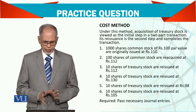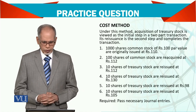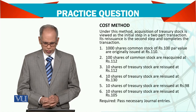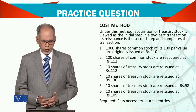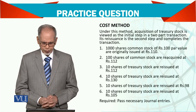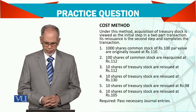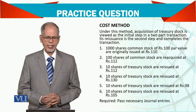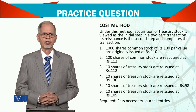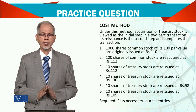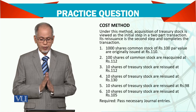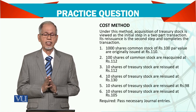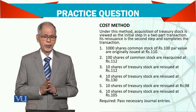Now let's see. You have issued, for example, 1000 common shares — ordinary shares — at Rs. 100 each par, originally issued at Rs. 110. Try to understand: the par value is Rs. 100, but you are issuing at Rs. 110.